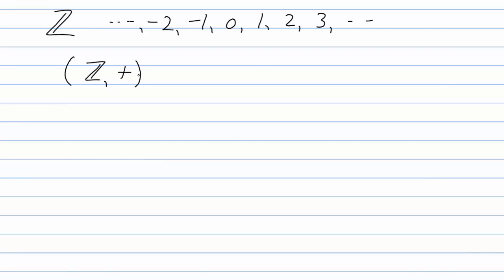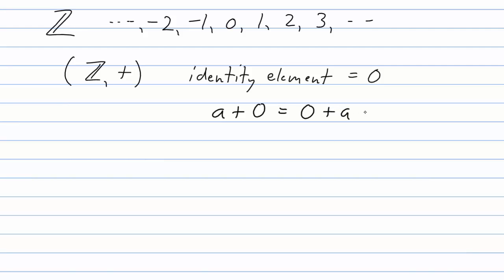You can take any two integers and add them and get another integer. The identity element is 0, because if you take any integer a and add 0, you get a back. That is, a plus 0 equals 0 plus a equals a. For example, 5 plus 0 is 5, 6 plus 0 is 6, negative 3 plus 0 is negative 3. So 0 is the identity element.